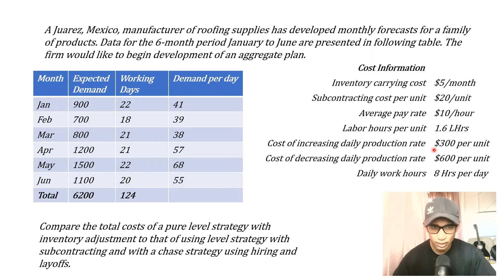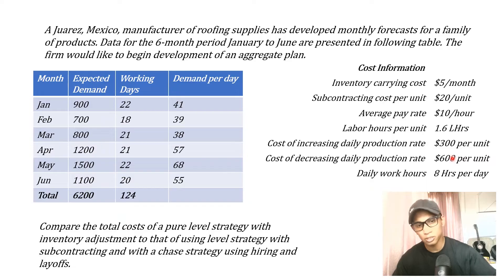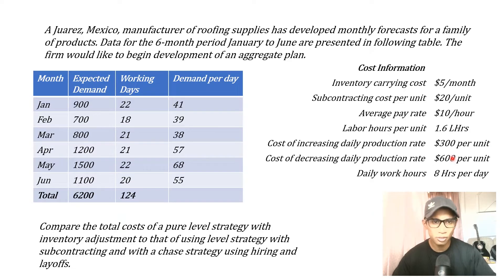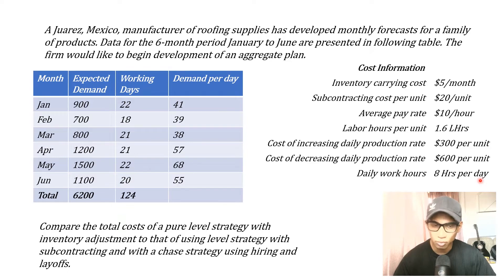The cost of increasing the daily production rate is $300 per unit — this is the hiring cost. If you hire workers, you need to train them and cover selection expenses until that person reaches the productivity level of everyone else, and that costs $300. The cost of decreasing the daily production rate is $600 per unit, which accounts for laying off workers — paying severance, extra pay, and potential reputational damage.